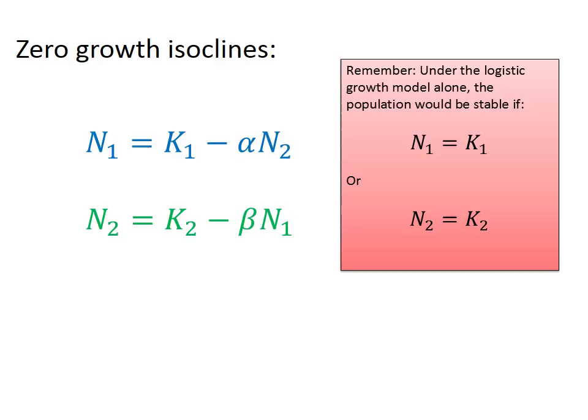So recall from the last lecture that under the logistic growth model alone, if individuals were only competing with members of the same species, the population would be stable if it was equal to the carrying capacity. So in this case, n1 would equal k1 or n2 would equal k2. Now when interspecific competitors are in the picture, the population needs to be less than the carrying capacity in order to be stable. The environment can't sustain a population as large as the carrying capacity due to the presence of an interspecific competitor. I find it helpful to think of this as a modified or a realized carrying capacity.